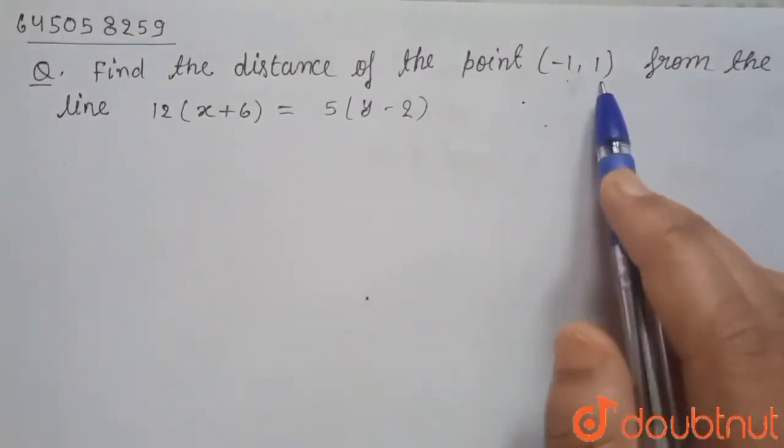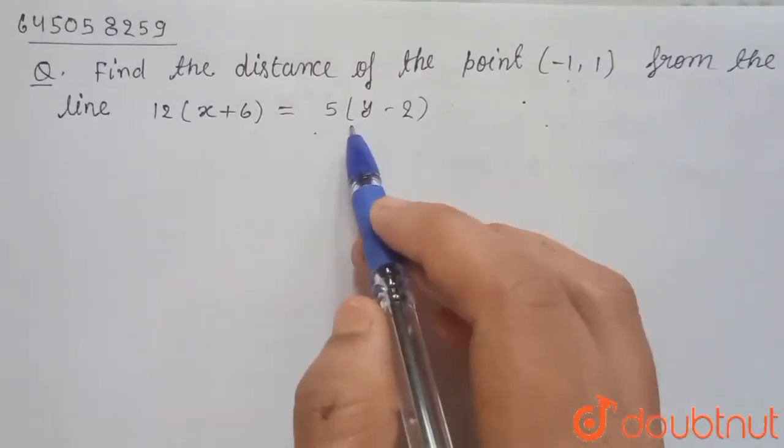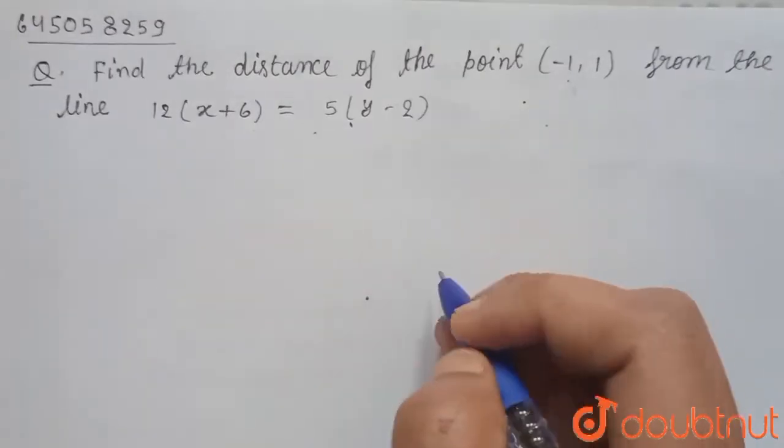Find the distance of the point (-1, 1) from the line 12(x+6) = 5(y-2).